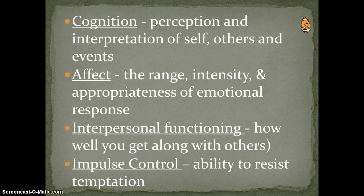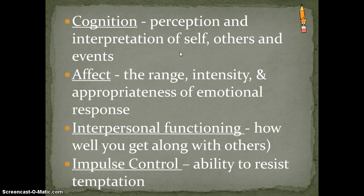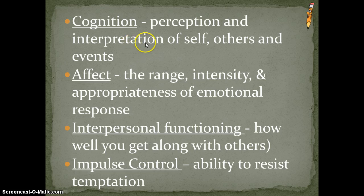You also have to have two of the following criteria. First is cognition — that your perception and interpretation of yourself, others, and events might be off. For example: 'I just heard something outside. I bet it's the government. They're there, they're going to get me. I know they're watching everything I do. They want to know about my personality PowerPoints.' If your cognition is off — your interpretation of things — you might have an issue.